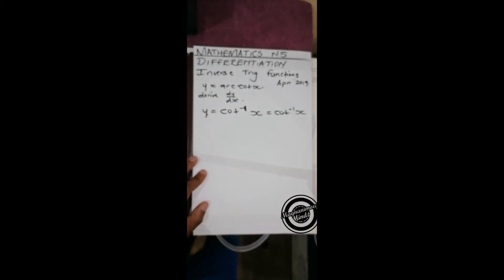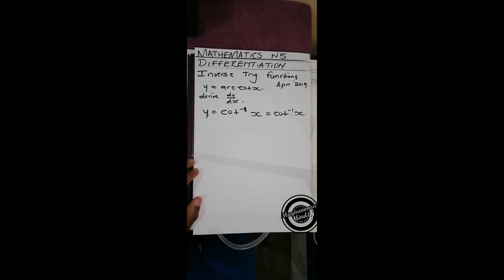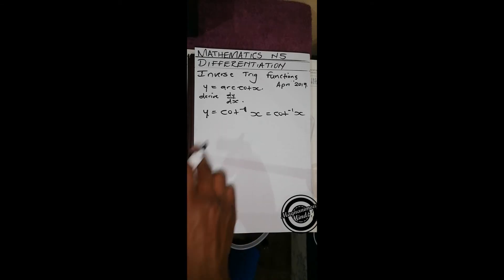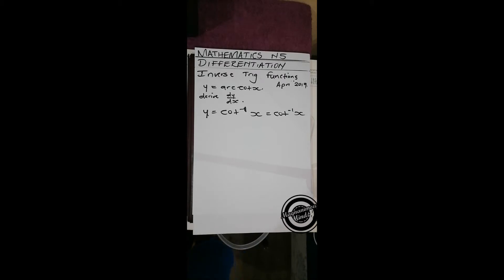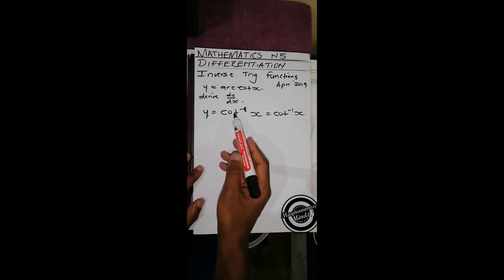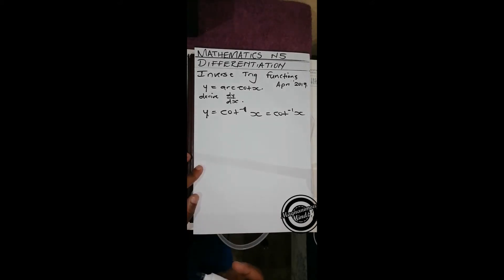Since we are told to derive this, that means at this moment we actually can't derive this, so we've got to put it in a form that we can derive. To do that, we apply cot on both sides in order to cancel this cot inverse.